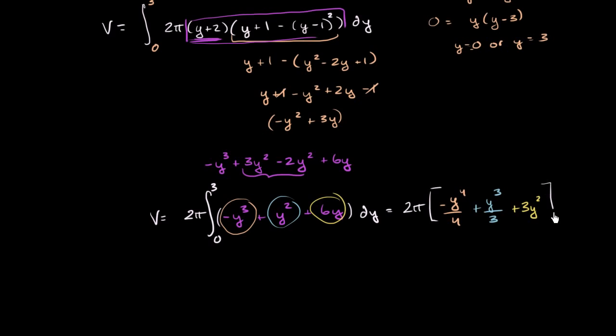And we are going to evaluate all of this business at 0 and 3. So this simplifies. This is going to be equal to 2 pi times, 3 to the fourth power is 81. So it's negative 81 over 4 plus, 3 to the third is 27 divided by 3 is 9, plus 9.